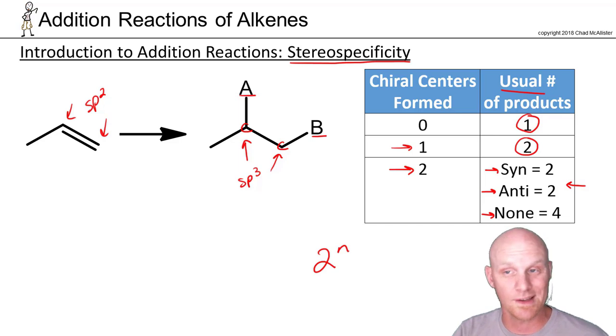So we've got to be a little careful. That's why I put usual number of products there, just in case we form a meso compound. But in this case, that's where your stereospecificity is going to come into play when you form two chiral centers.